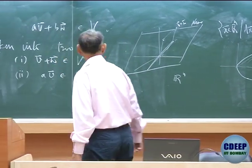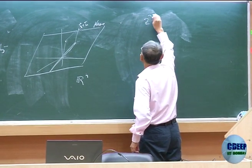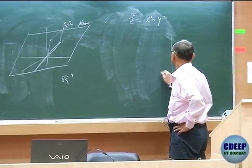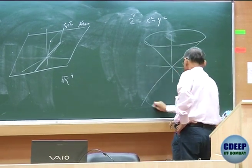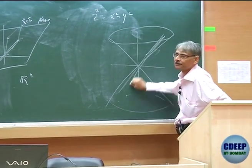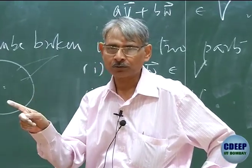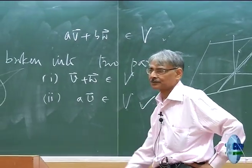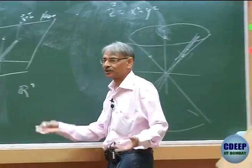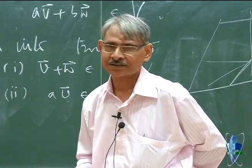A vector space must pass through the origin, and be a flat straight object. A parabola y² = 4ax passes through the origin, but if you take a point on it, scalar multiples will not stay on the parabola. Similarly, a cone in 3-space satisfies the scalar multiple property — if you take any point on the cone, the whole line through origin lies on the cone. But if you take two vectors on the cone and add them, the sum may fall on the z-axis and not be on the cone.